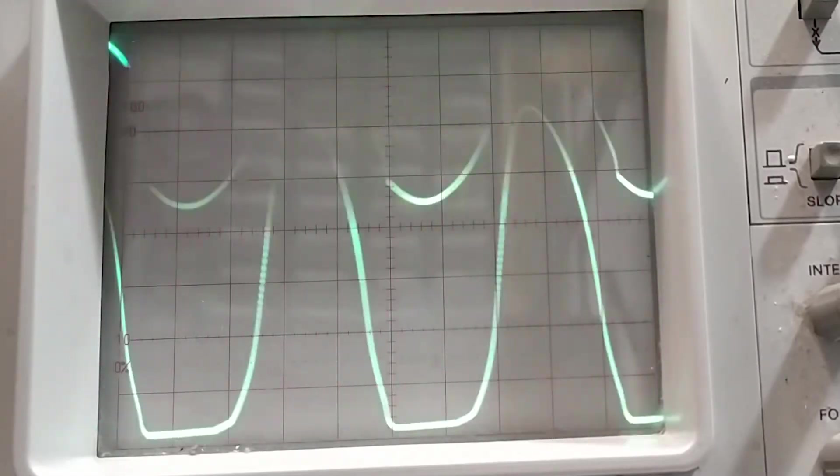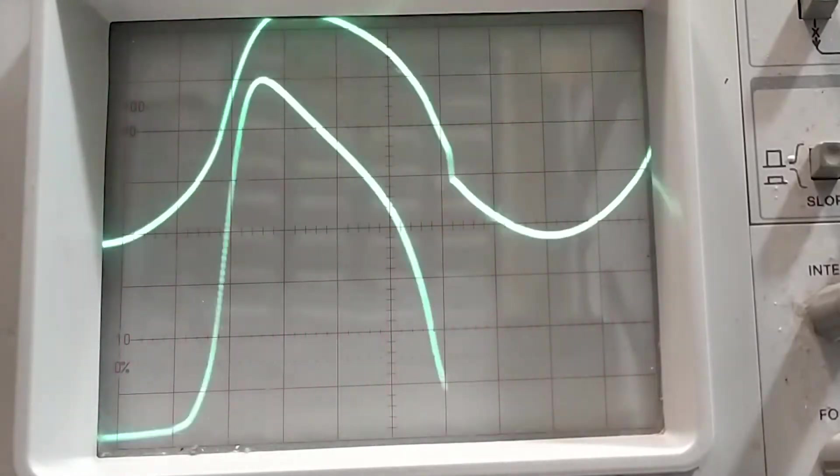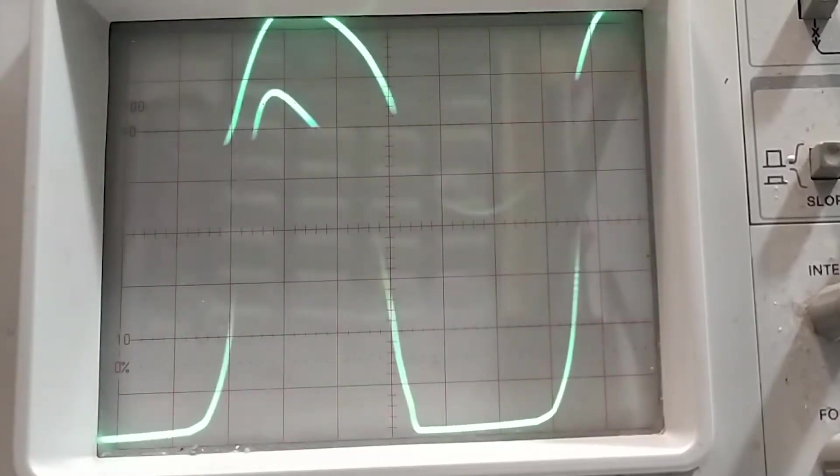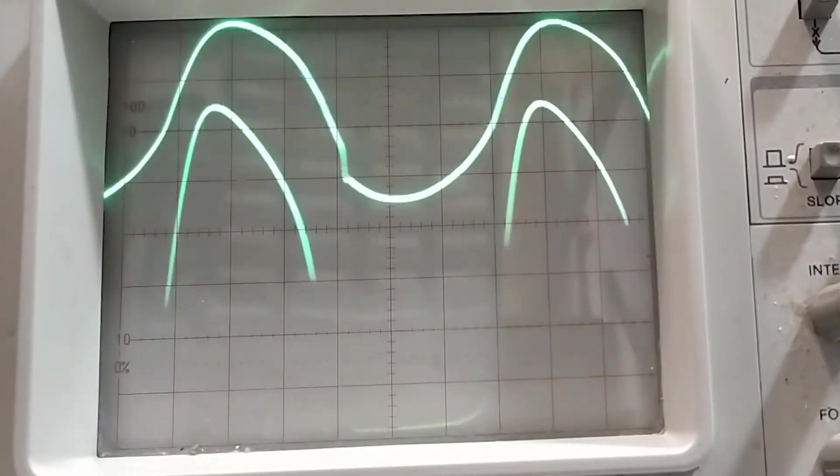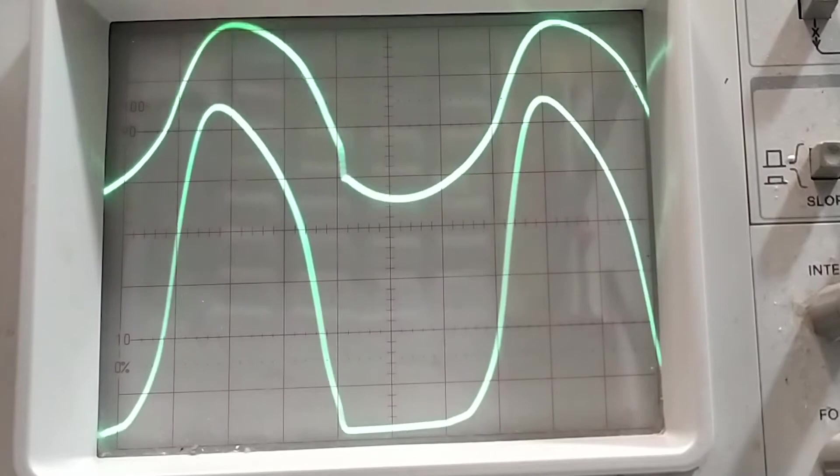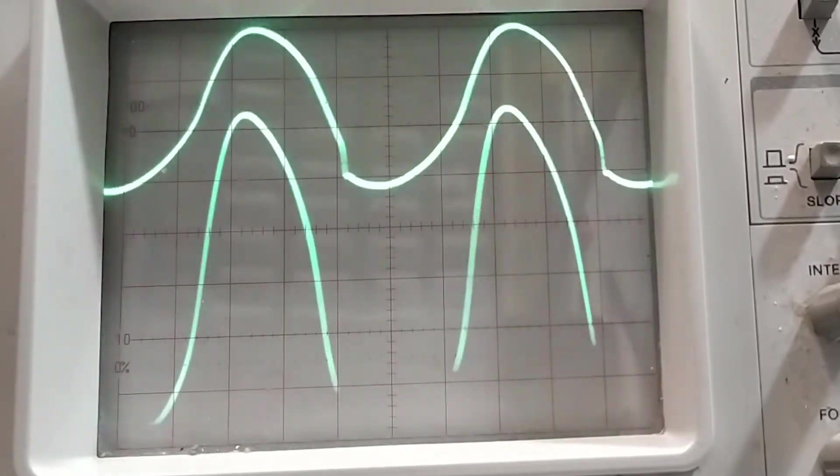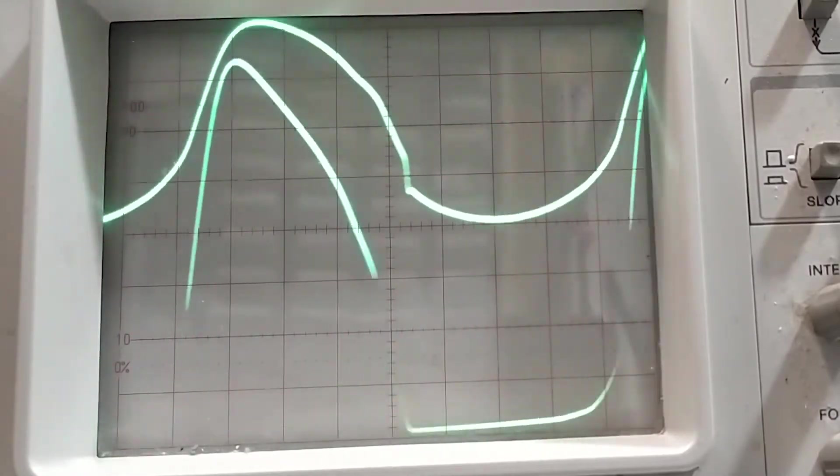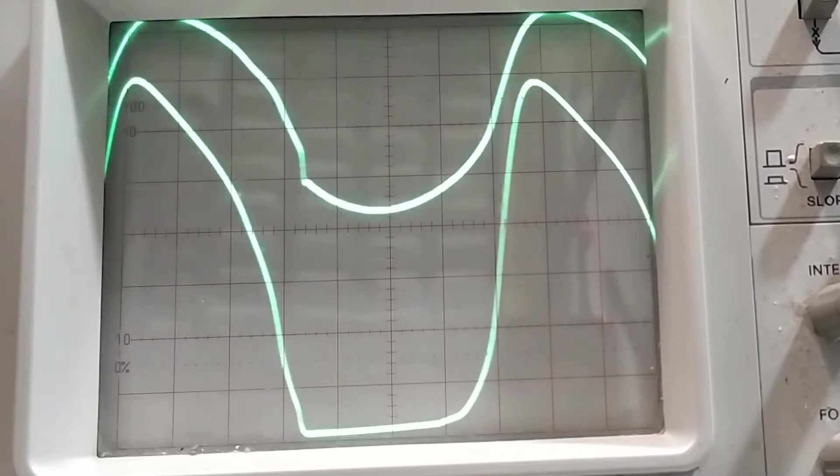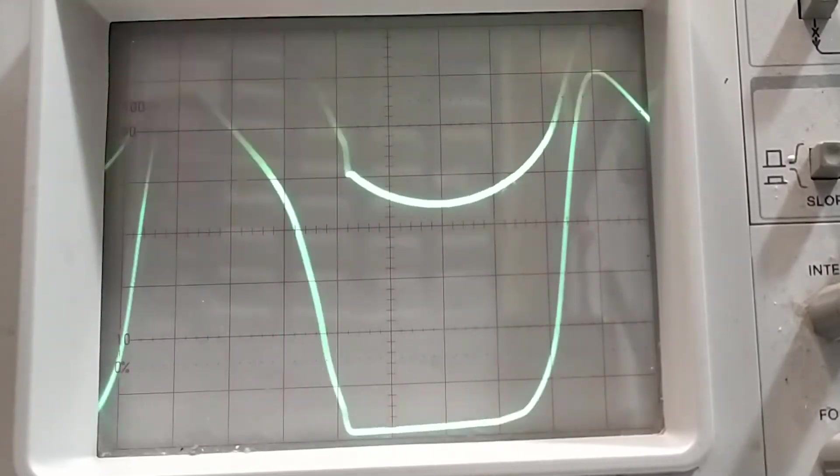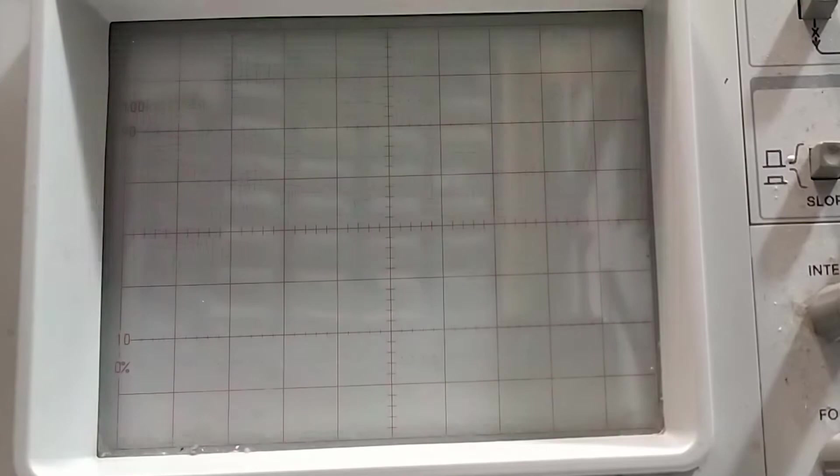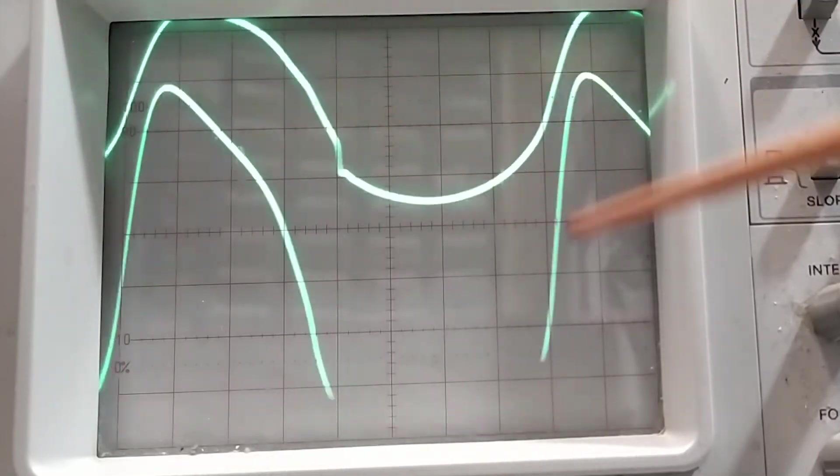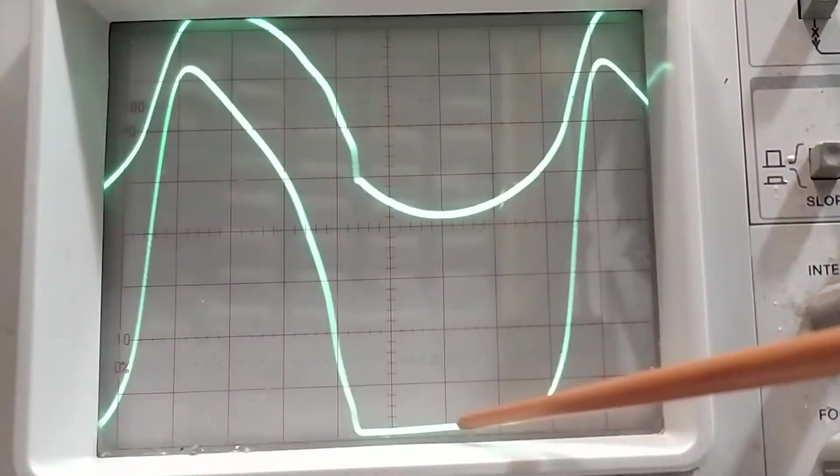You can actually see, if I change the output of the signal generator here. This potentiometer for the amplitude in my signal generator is a little scratchy. You can see, with lower frequency, this gets even worse. Ignore that kink there. The point is, it's getting worse.